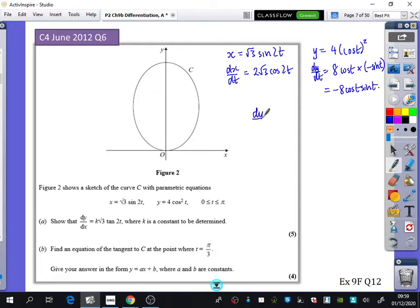And we're trying to find out what dy by dx is equal to, which is going to be this one, minus 8 cos t sine t divided by 2 root 3 cos 2t. Now, the thing we're aiming for is k root 3 tan 2t. So when you look at the thing you're aiming for and the thing that you have, what is the biggest difference between them? The arguments. Yeah, the arguments. Here we've got 2t, but these ones here are in terms of t. So we're going to need to think about how we can combine the numerator.